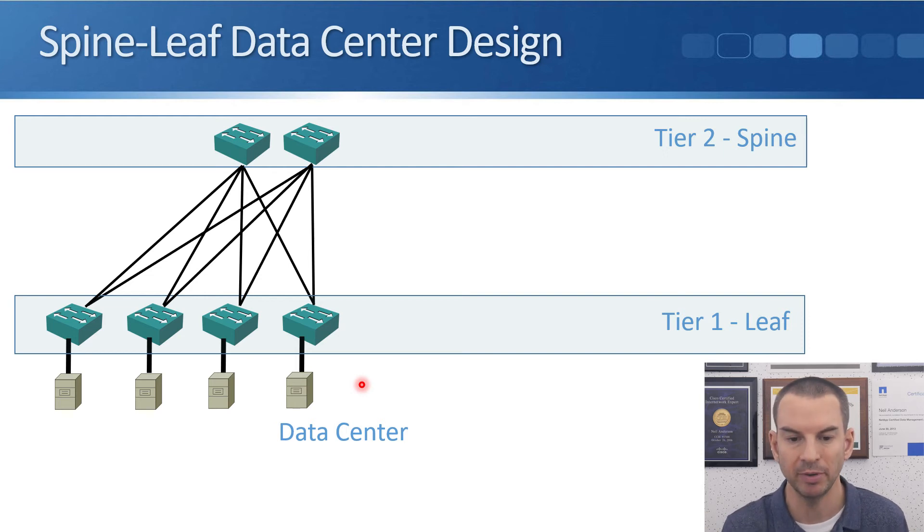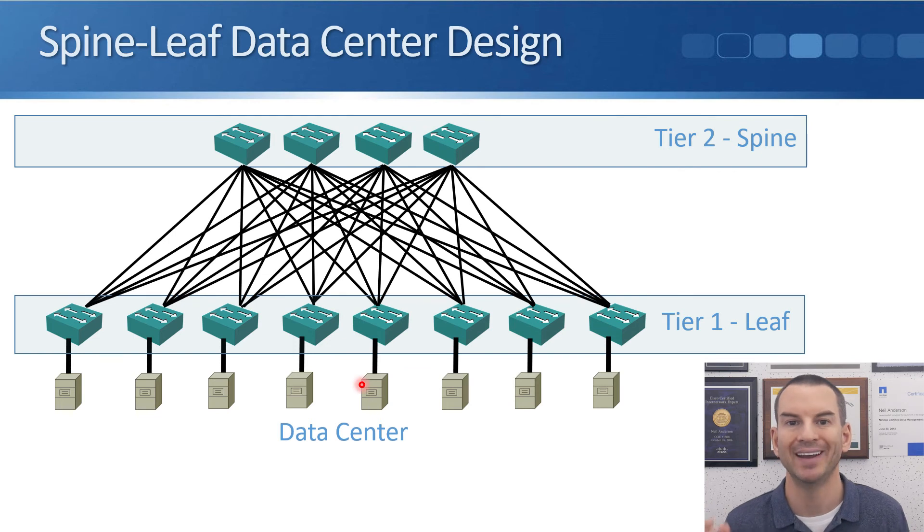What we can do is with the scalability, we can just add on additional switches in the east and west direction. So you can see here if I've got a larger data center, I can just add additional spine switches and additional leaf switches. Now with the Spine-Leaf design, we've got the spine switches here which are at a higher level in the hierarchy. We don't have our servers connected there.